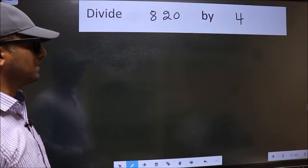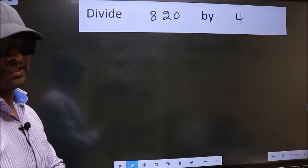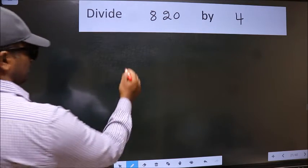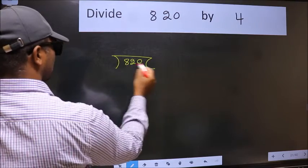Divide 820 by 4. To do this division, we should frame it in this way: 820 here and 4 here.